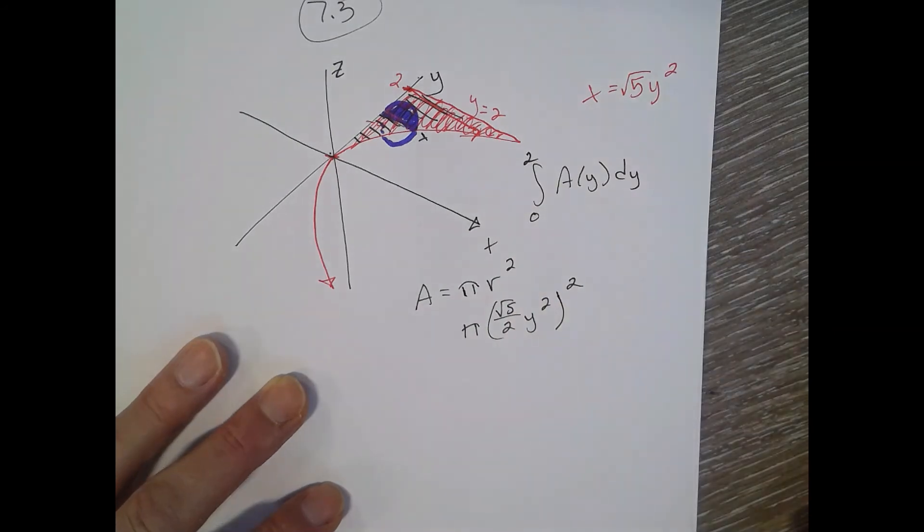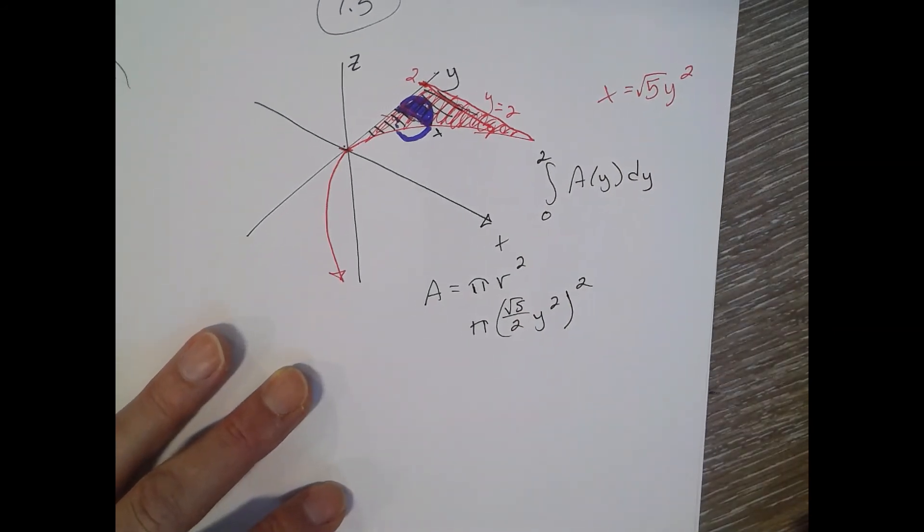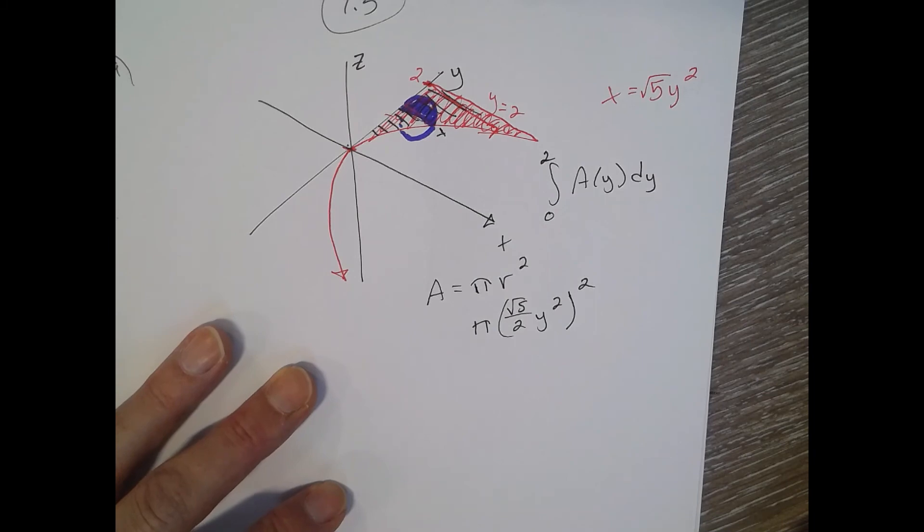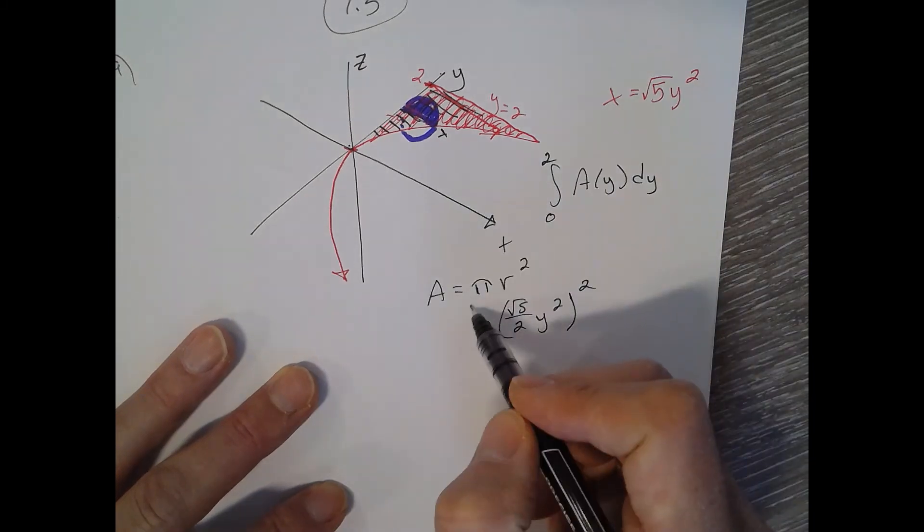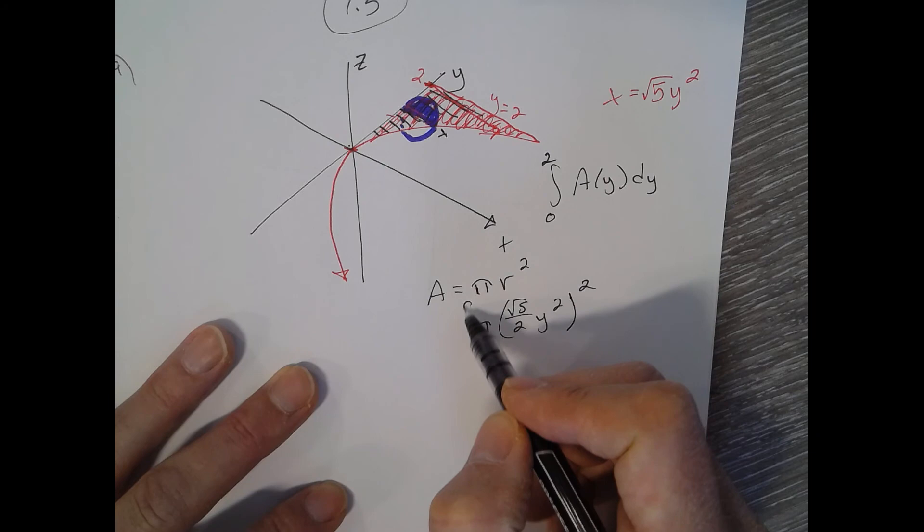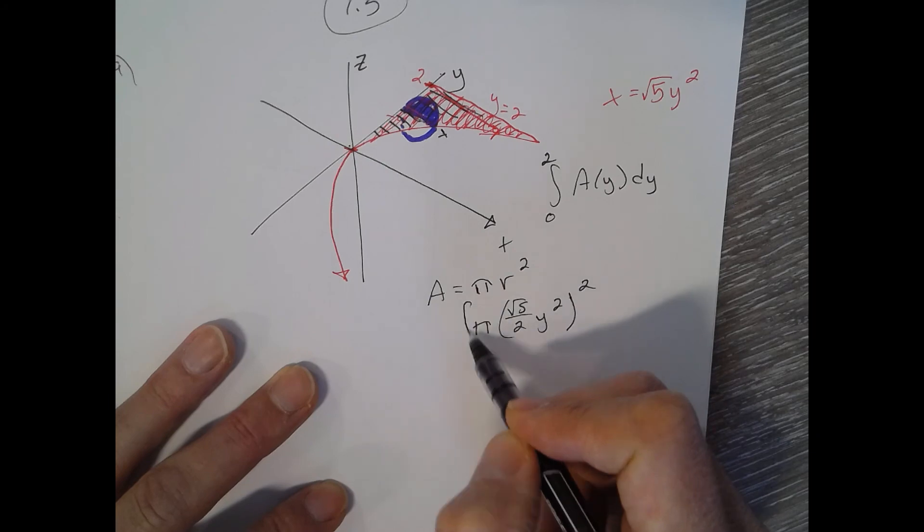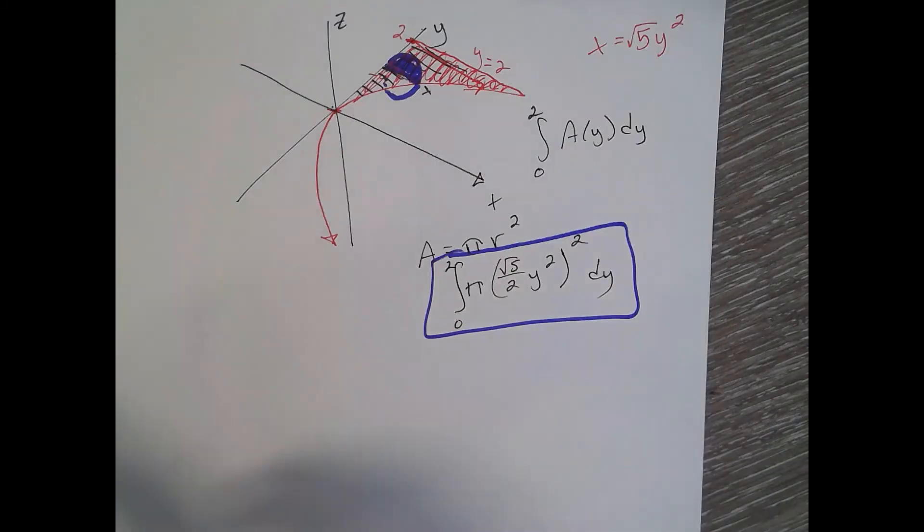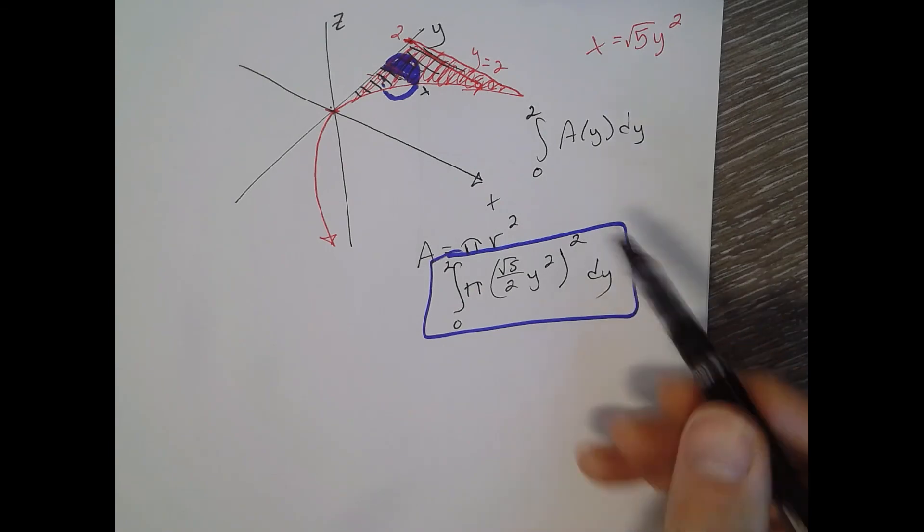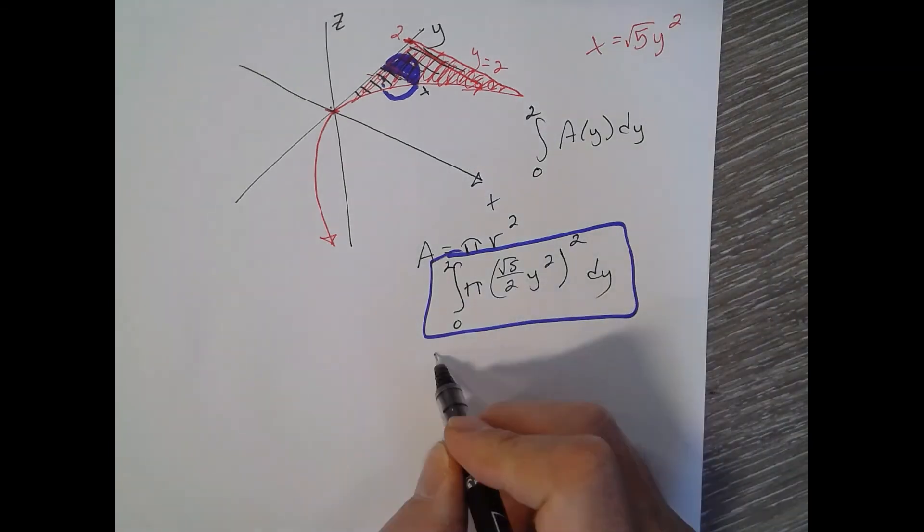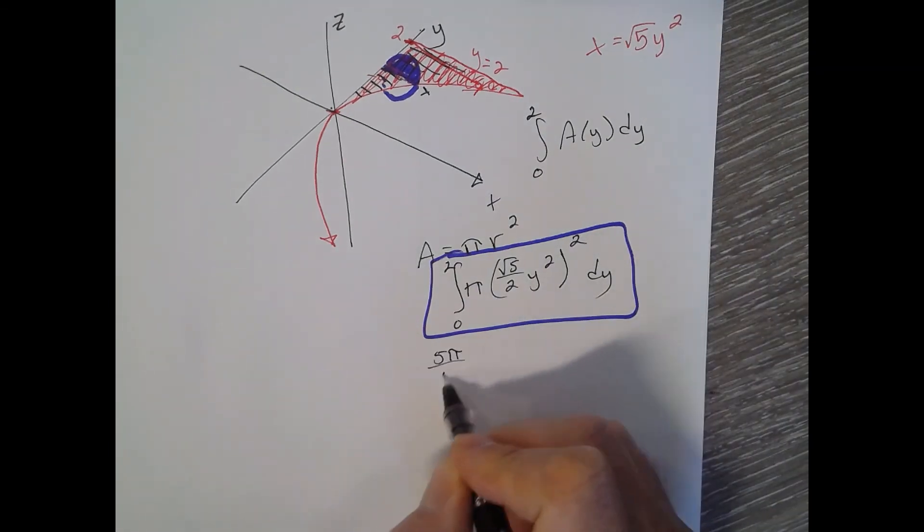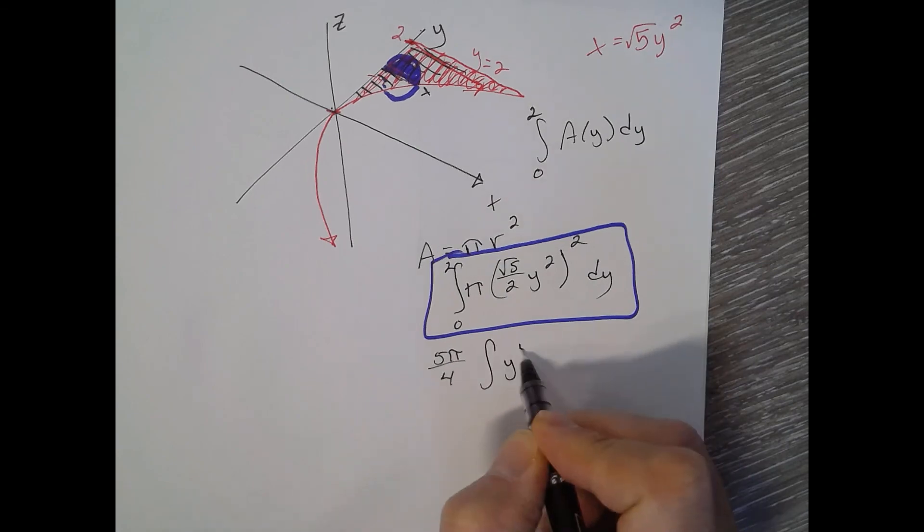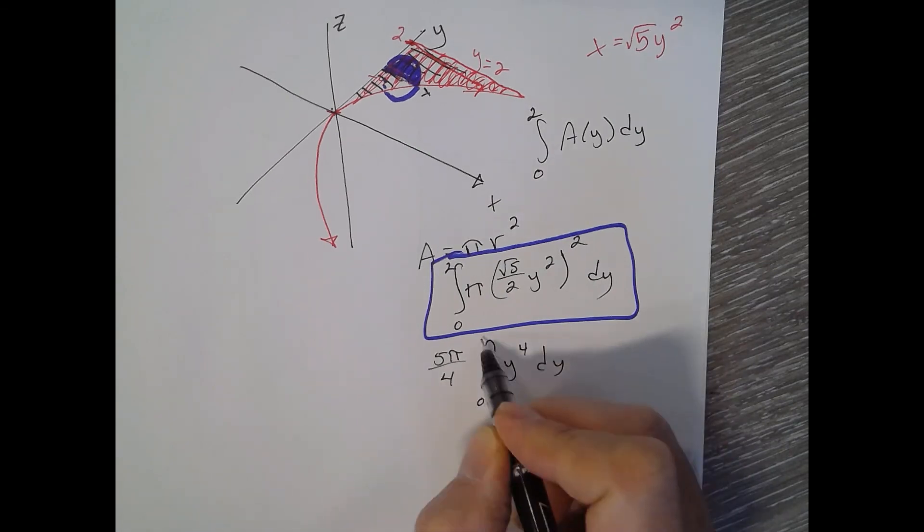So pi r squared, and we'd integrate it from 0 to 2. And there's our integral. We could simplify that a little bit. Square root of 5 squared is 5, so 5 pi over 4 integral of y to the fourth dy would be a pretty simplified version of it.